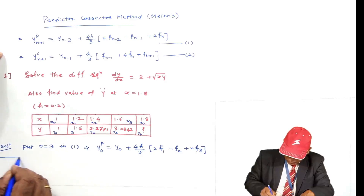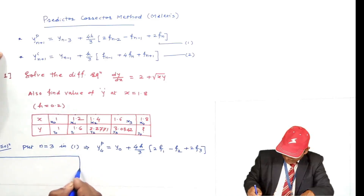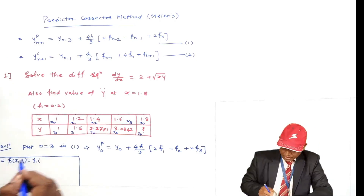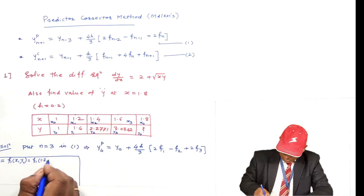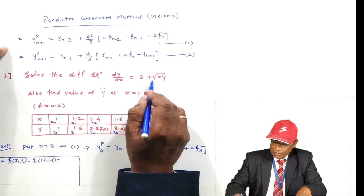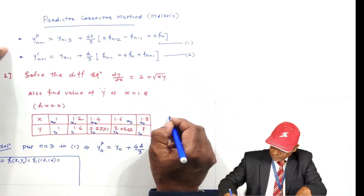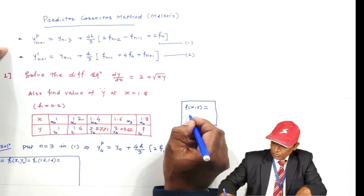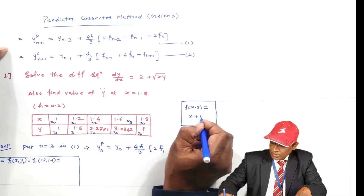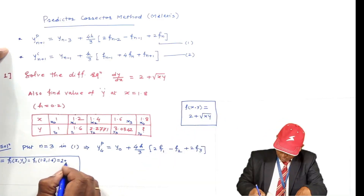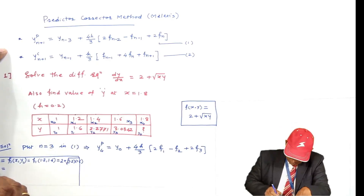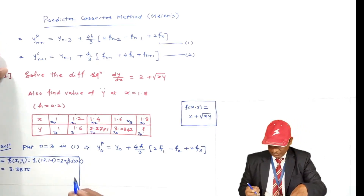F1 = f(X1, Y1). X1 = 1.2 and Y1 = 1.6. The function is f(x, y) = 2 + √(xy). So F1 = 2 + √(1.2 × 1.6) = 3.3856.